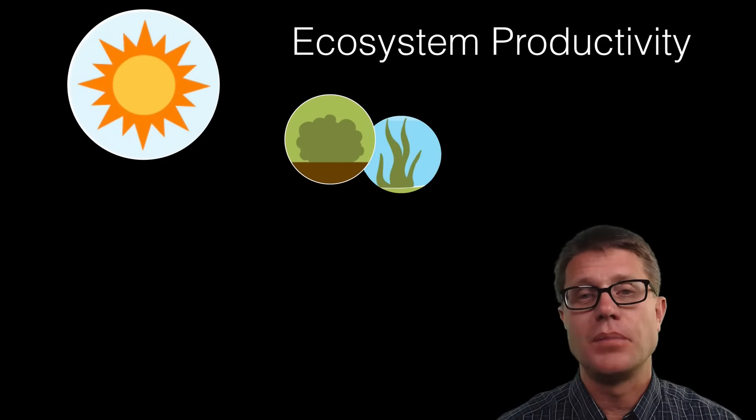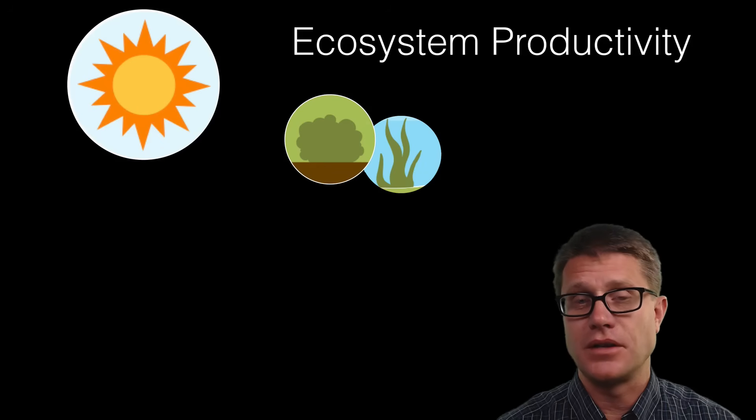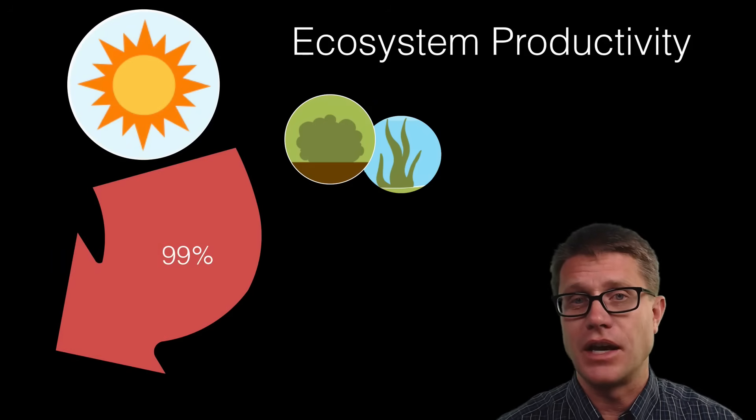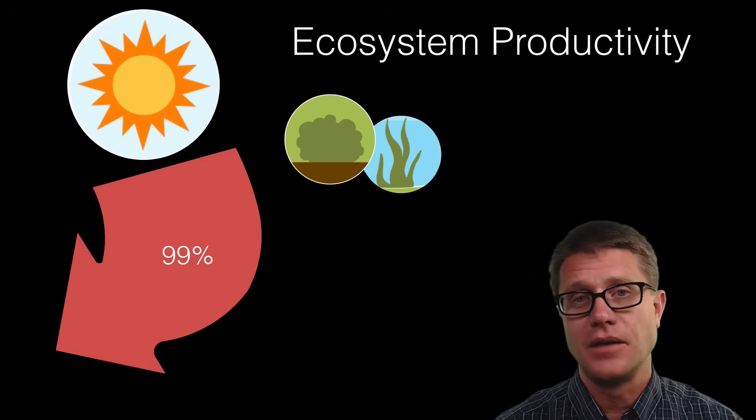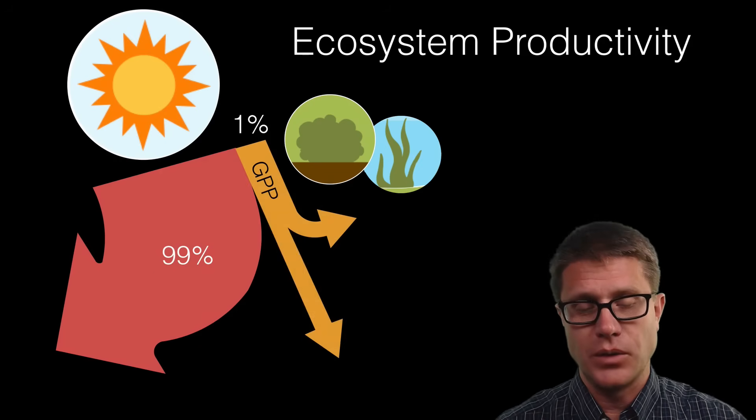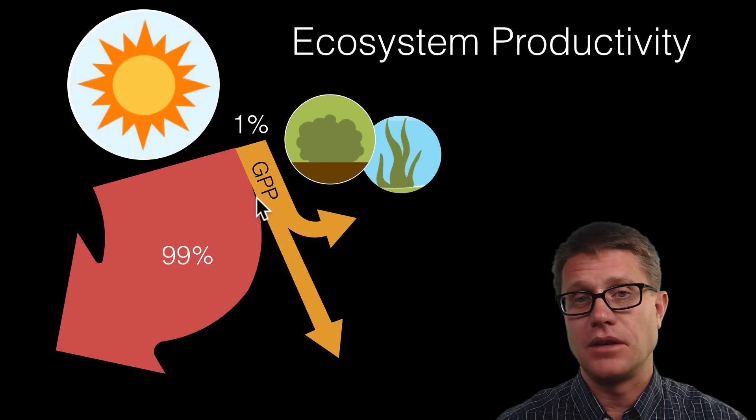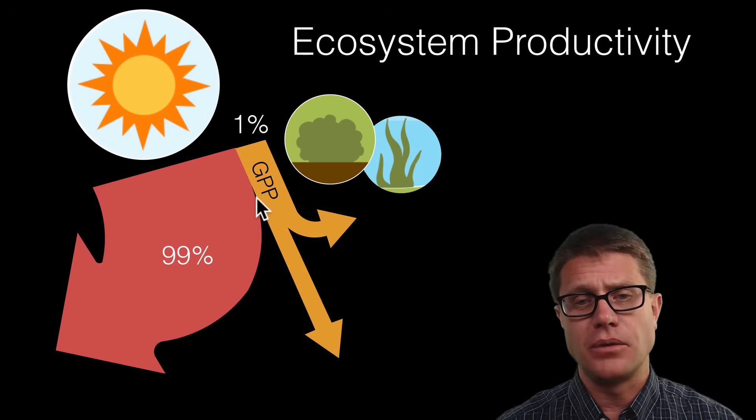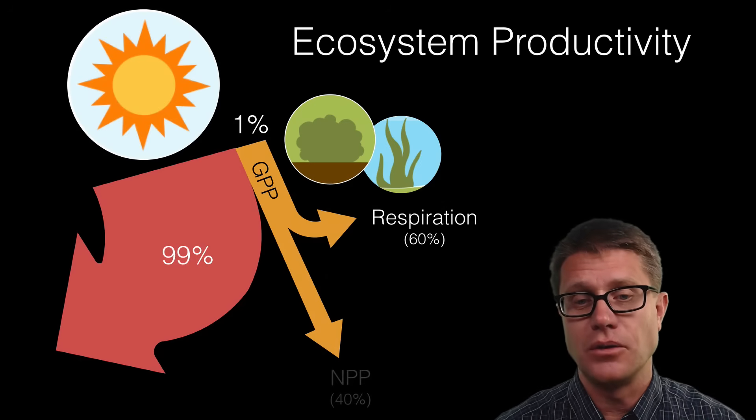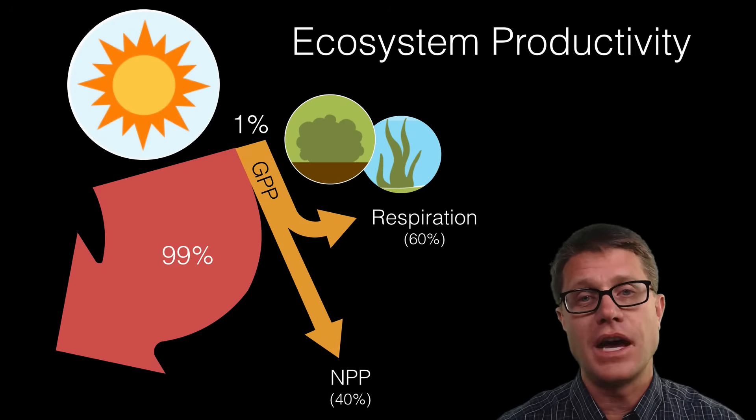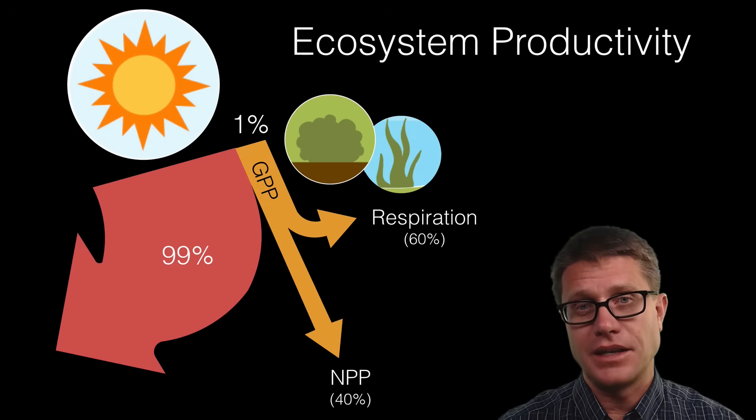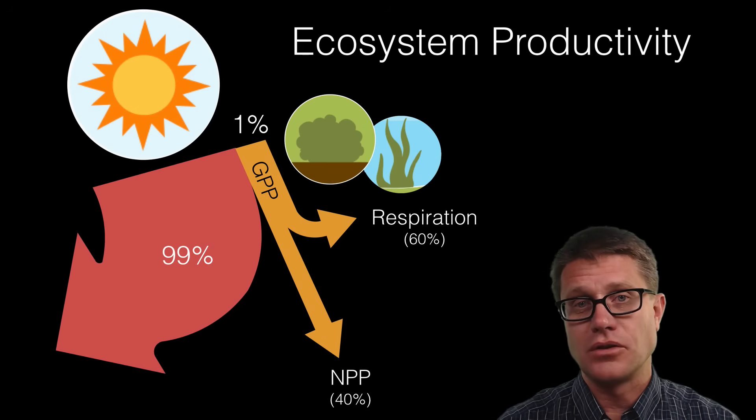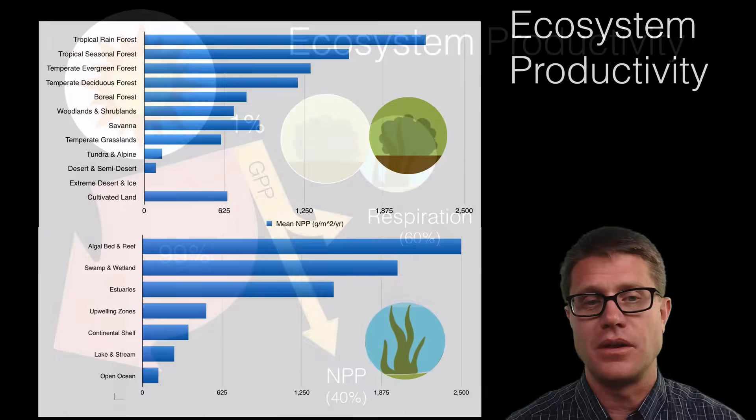So no matter where the energy comes from we can measure the amount that gets into the producers using productivity. Now the bad news is that hardly any of that energy actually gets into the plant. 99 percent is going to move through it, bounce off of it. The plant does not get it. Only 1 percent actually goes into the producer and we call that the gross primary productivity. It is the amount of energy that the plant actually gets. Now what is the plant going to do? It has to survive. And so it is doing respiration. That is where most of the energy goes. And a small percent of it goes to what is called the net primary productivity. That is the amount that the plant gets if we subtract the amount that it used for respiration. So the bad news is that not much energy goes into the producers. What is the good news? There is so much energy contained within the sun.